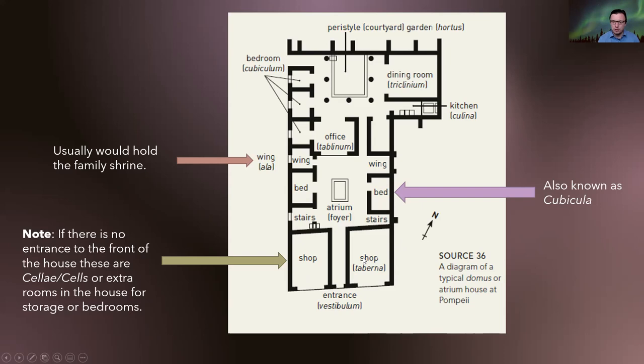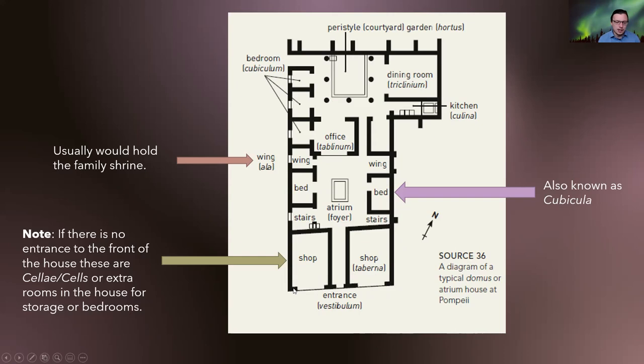Housing in Pompeii and Herculaneum was very often a mixture of public and private. If there is an opening to the street into these little rooms, they are called tabernae. However if they are closed off from the street and have openings only from inside the house, these are called cellae, and they could be used as storage or extra bedrooms.